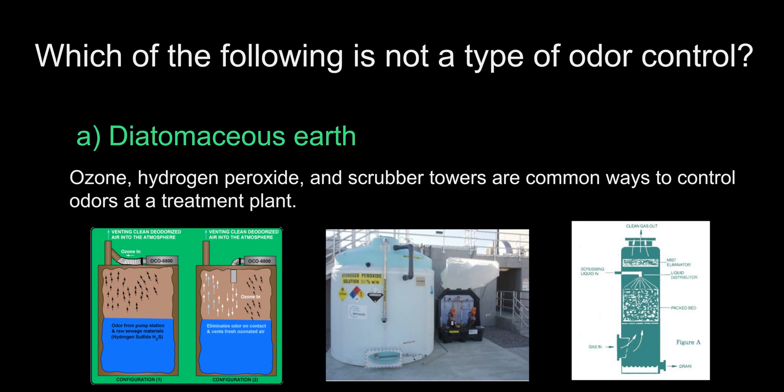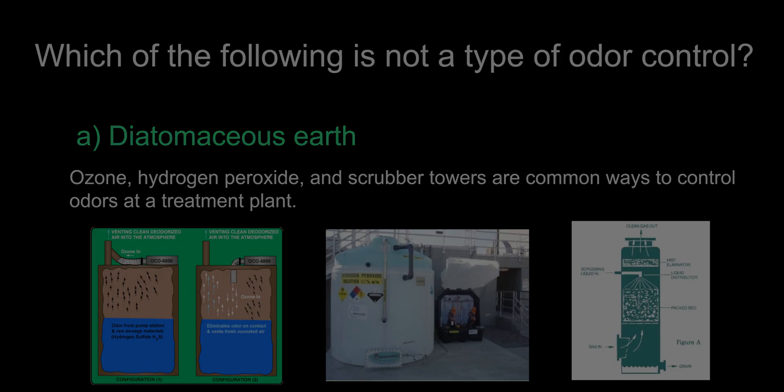The answer is A, Diatomaceous earth. This question isn't about diatomaceous earth — it's about being able to recognize common ways to treat odors. Activated carbon and liquid scrubber towers are very common at treatment plants. Chemical additions such as hydrogen peroxide and chlorine, as well as ozone gas, can be used to control odors at pump stations.